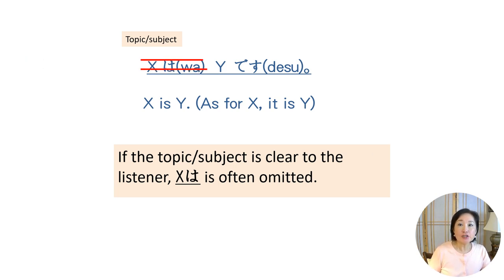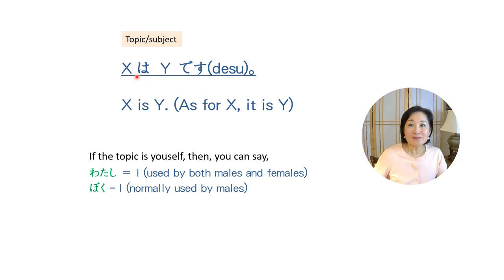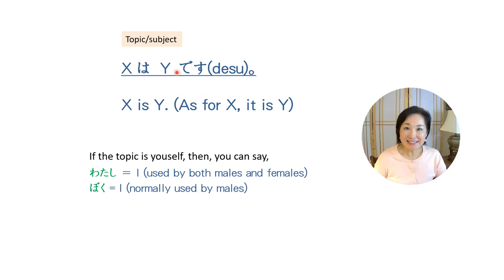Japanese speakers tend to omit subjects whenever they think it is clear to the listener what or who they are referring to. To say 'I am a teacher,' the topic here is watashi. There are many pronouns to call yourself in Japanese, but watashi is used by both males and females. So I can say watashi wa sensei desu. And when everyone knows I'm talking about myself, I can omit watashi wa and simply say sensei desu.